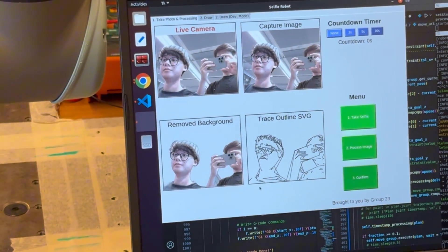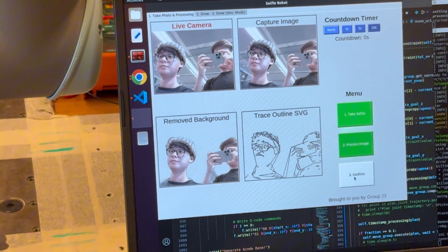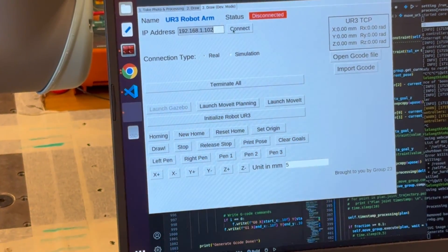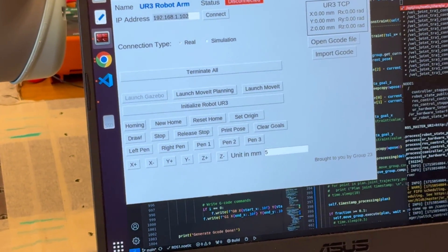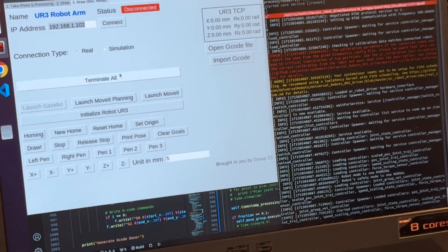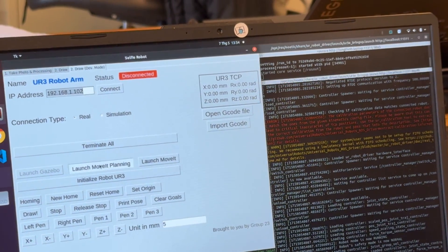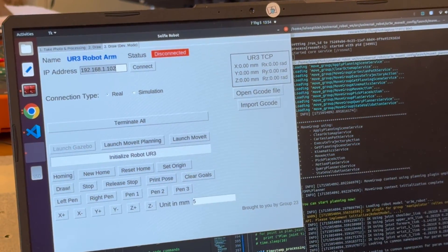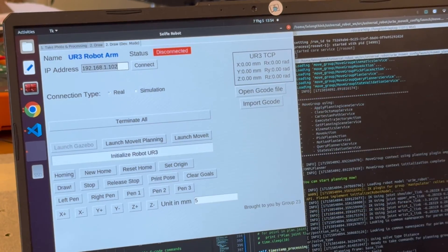Yep, the result is pretty nice. After we click confirm, the outlined SVG will be converted to the G-code file. Then we move to the draw tab. Click connect to the robot with this IP address. When the robot is connected, we just launch the move planning. And now we can initialize the robot UR3 to get all the information of the robot.